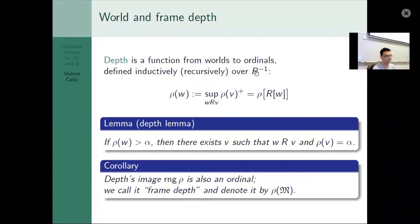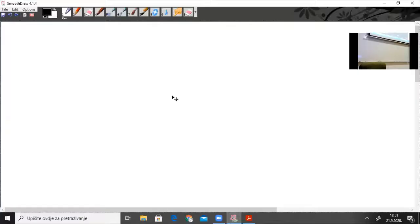I found that we can have inductive or recursive definitions over such a relation, and the most obvious one is the depth of world. So the world that doesn't have any R successors is of depth zero, and the world that only has successors of depth zero, and at least one of them has that one, and so on.